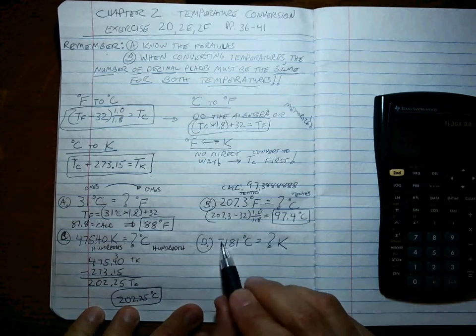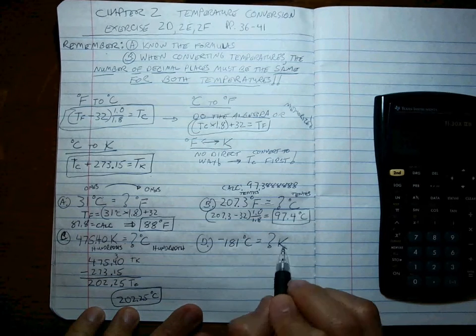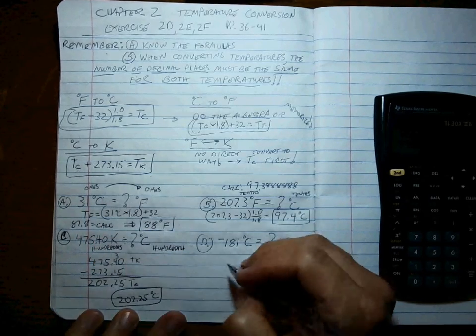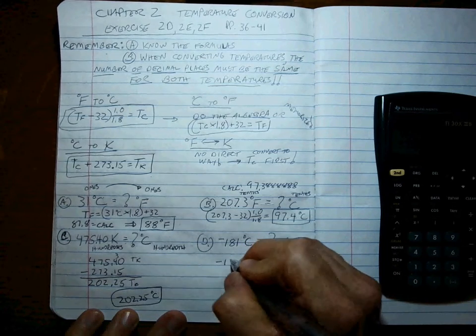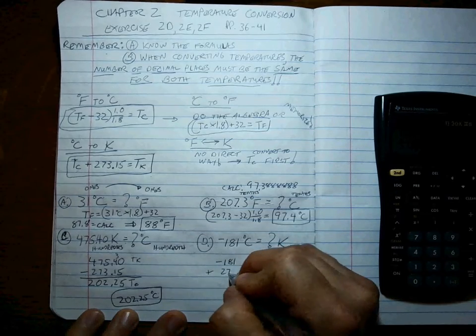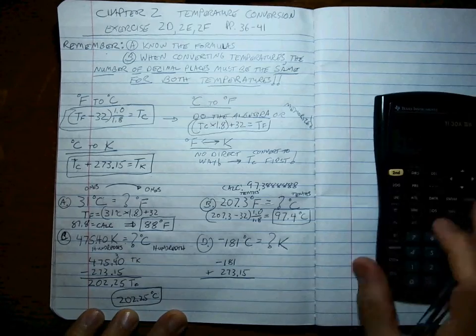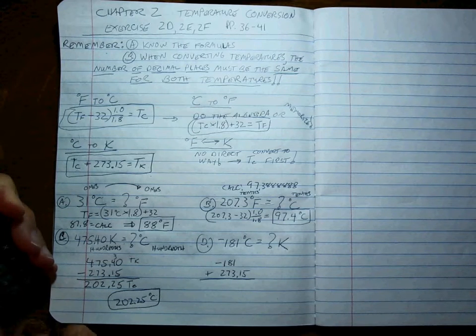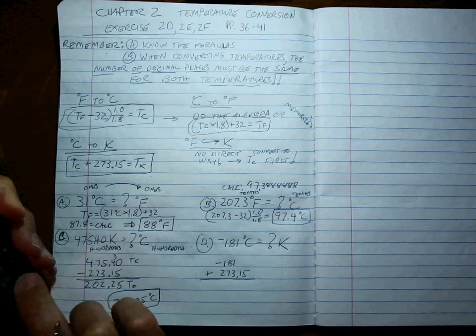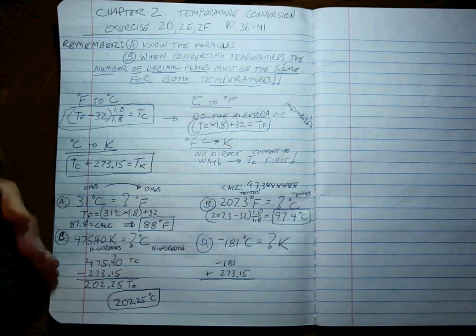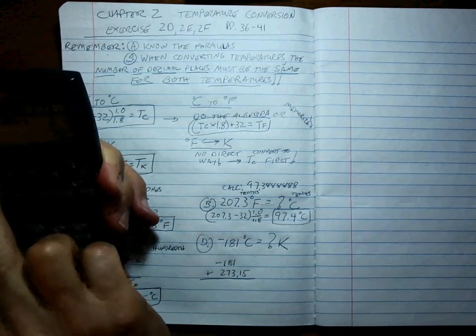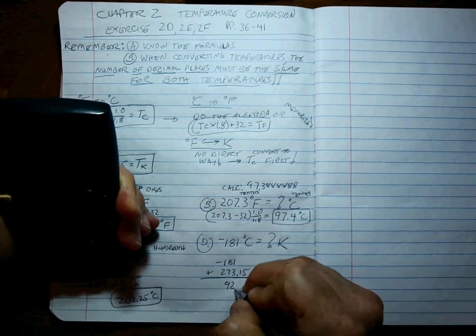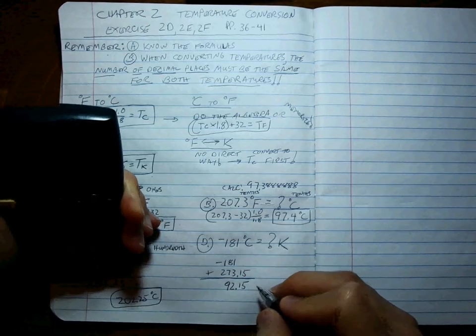Okay, final problem. Negative 181 degrees C is what temperature in Kelvin? We take the Celsius temperature, we add 273.15 to it to get the temperature in Kelvin. So, negative 181 plus 273.15. Minus 181 plus 273.15 equals 92.15.